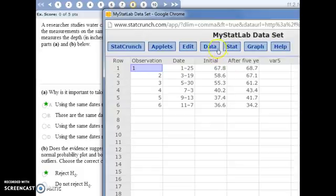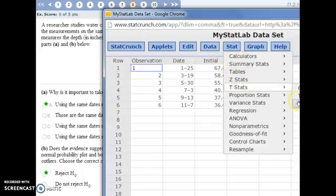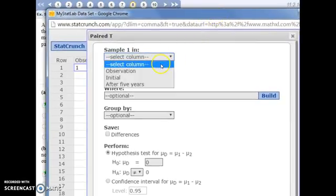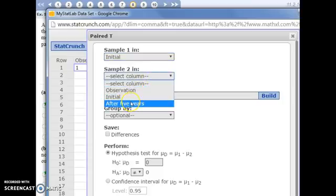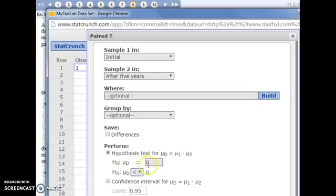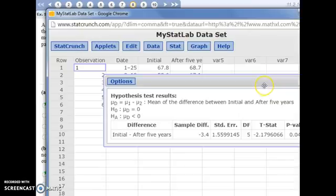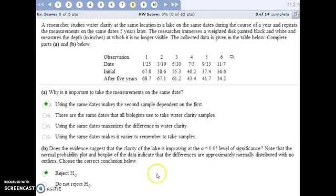Our null hypothesis is that there's no difference, that the water clarity has not improved. So we're taking our initial observation and then after five years. And our null hypothesis is that the difference between the two means is zero. There's been no change in the clarity. And our alternative is that it's going to be less than. Because we were hoping that it improved, which means our initial values, our clarity is less than our observations five years later, where the clarity is better. So let's compute that. We get a p-value of 0.04. Our level of significance was 0.05. So since our p-value is less than that level of significance, we do need to reject the null hypothesis, which is a good thing here. That means we're accepting the alternative, which is that the water clarity has improved.